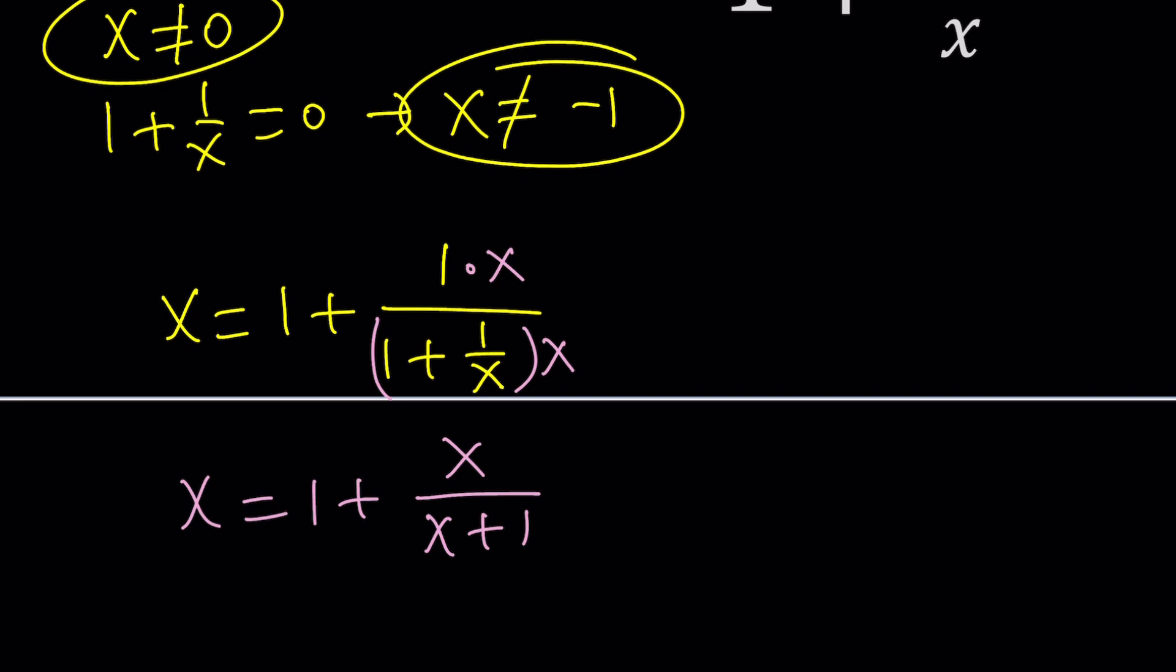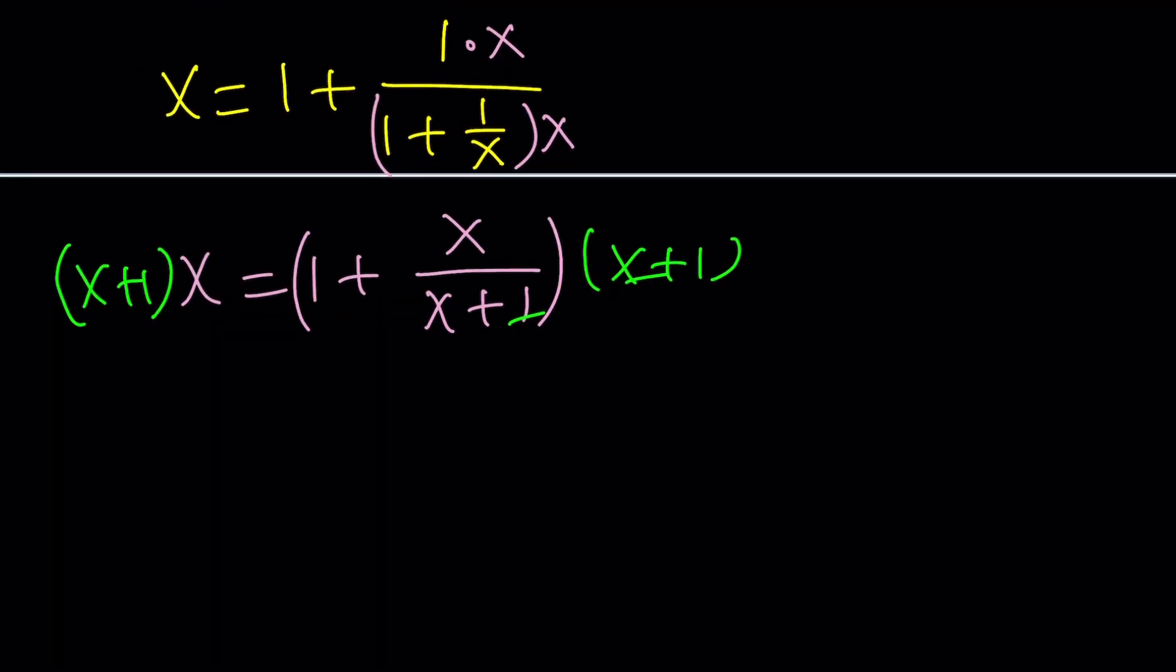And then here, if you want, again, you can multiply by x plus 1 or make a common denominator. Same idea. And we can just distribute. And when we distribute x plus 1, it's going to cancel out here and here. So we're going to get x times x plus 1 equals x plus 1 when you multiply by 1, and then x plus 1 cancels out and we end up with x.